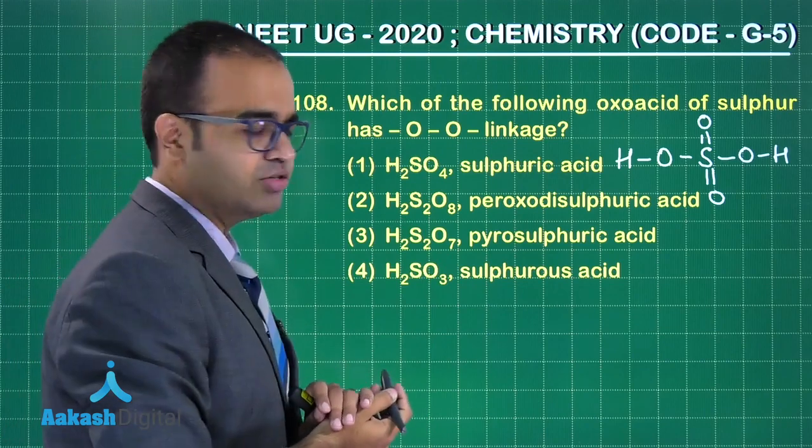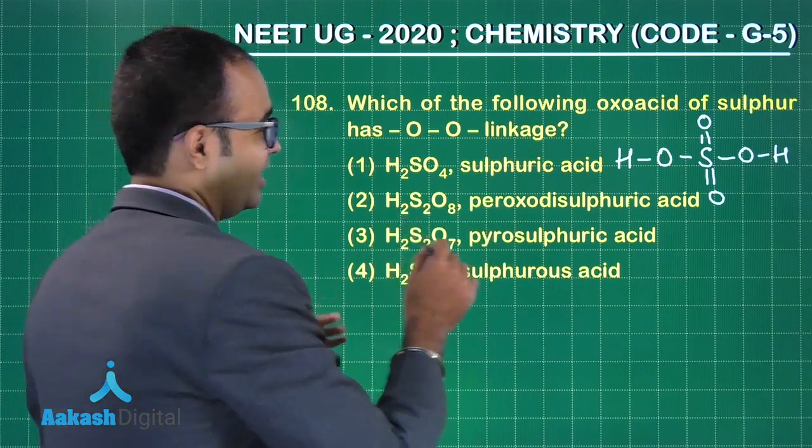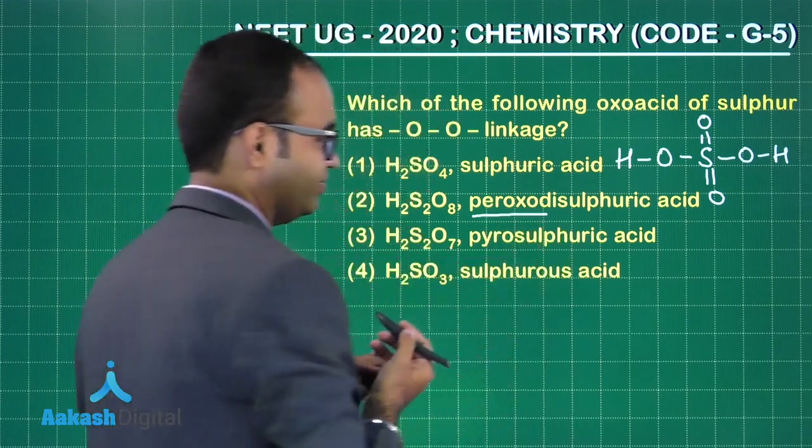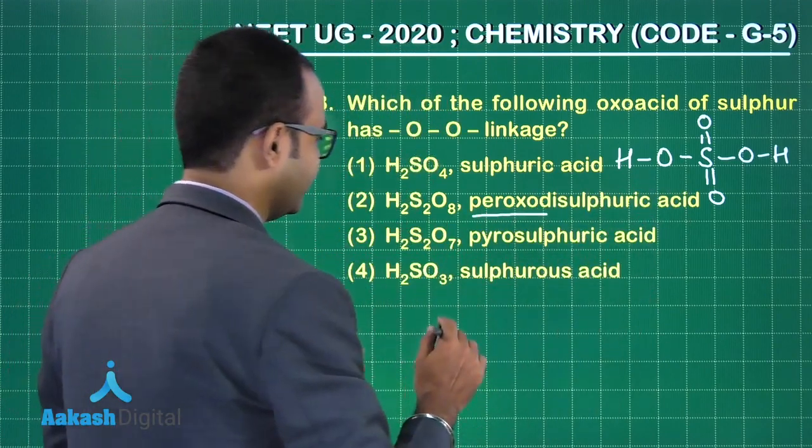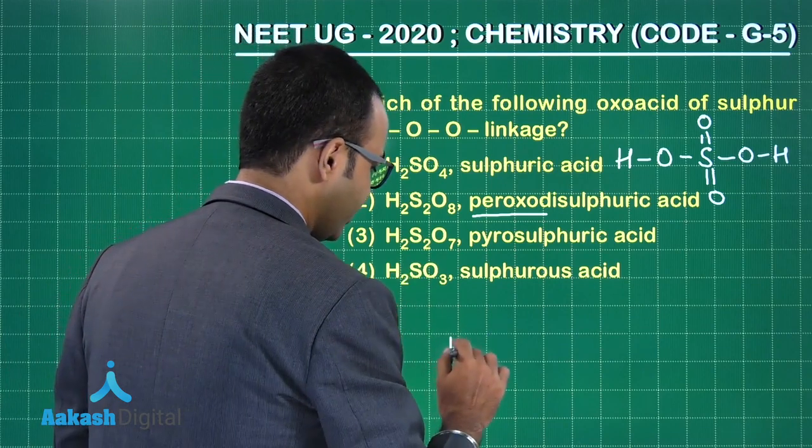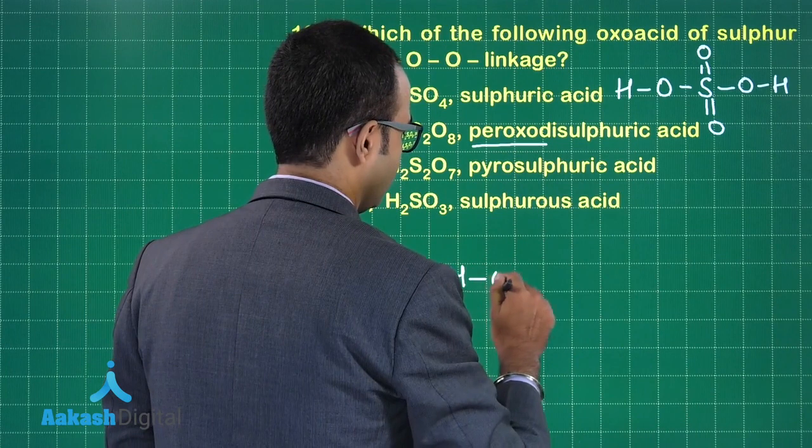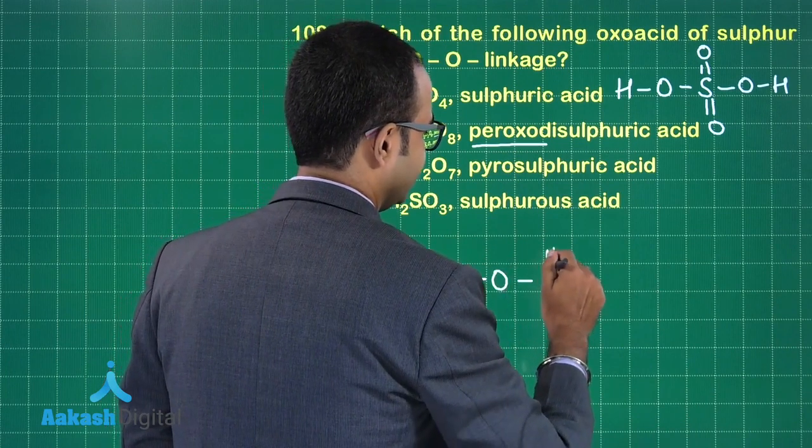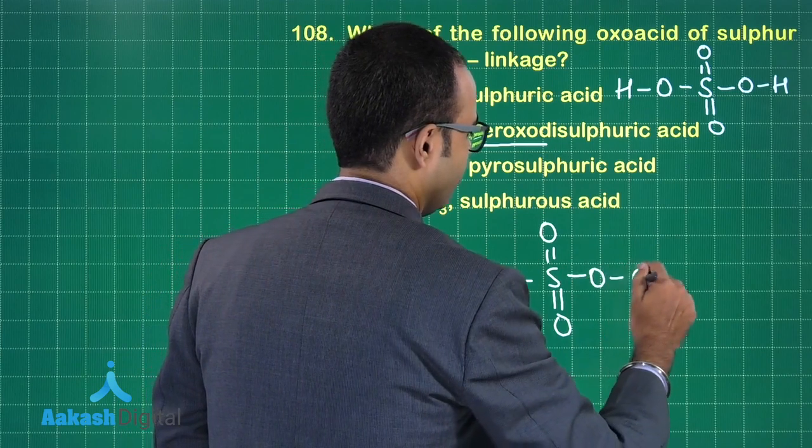So it doesn't have a peroxide linkage. H2S2O8 - it is already written over there, it is peroxo disulfuric acid. If I draw the structure of the second option, what we have: H-O-S, double bond O, double bond O, double bond O, O-O...